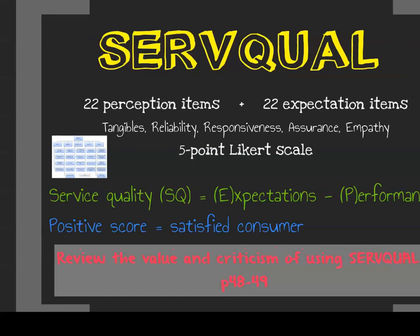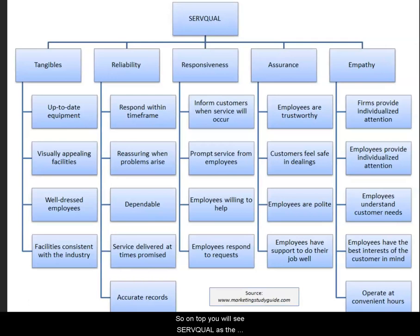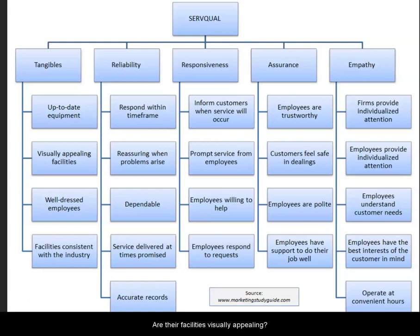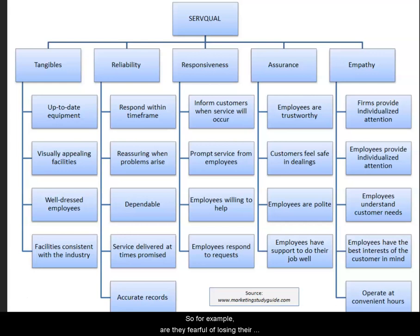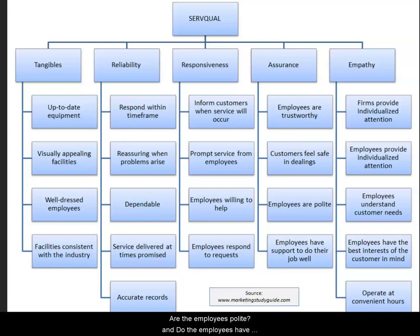To illustrate what the SERVQUAL questionnaire looks like: it uses the five dimensions, with four items measuring each. Using a travel agency as an example for tangibles: do they have up-to-date equipment? Are their facilities visually appealing? Do they have well-dressed employees? Are facilities consistent with the industry? For assurance: are the employees trustworthy? Do customers feel safe in their dealings — for example, assured that their money will go toward their trip? Are the employees polite? Do employees have support to do their job well? Customers fill this in for a specific company, and the organization can then determine whether their actual performance reached customer expectations.